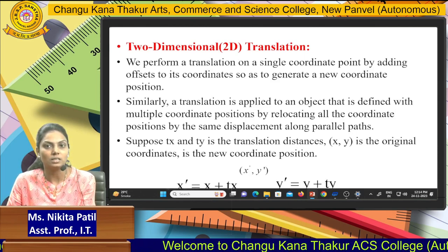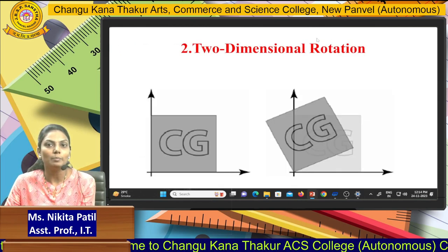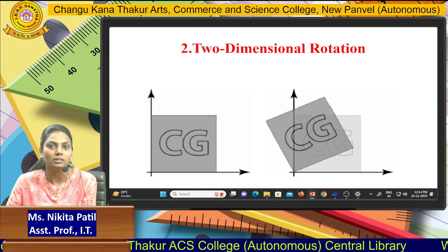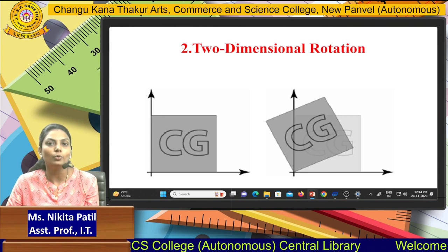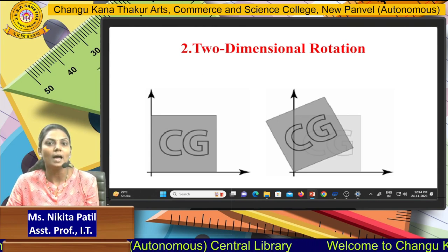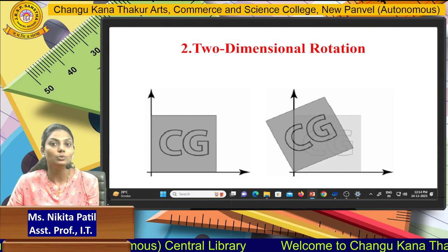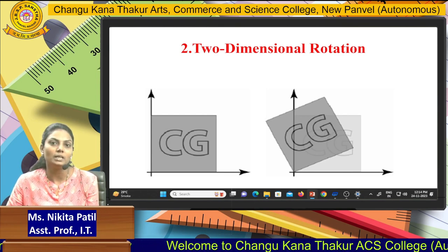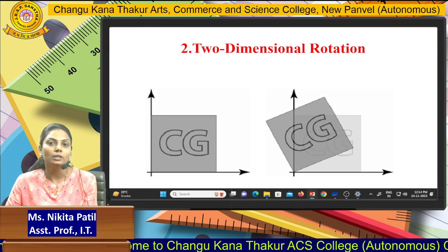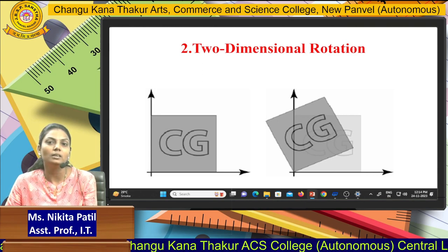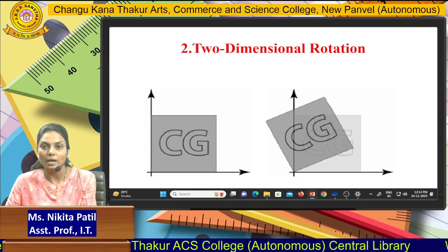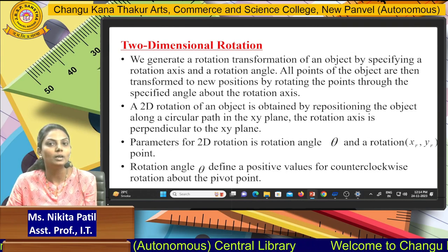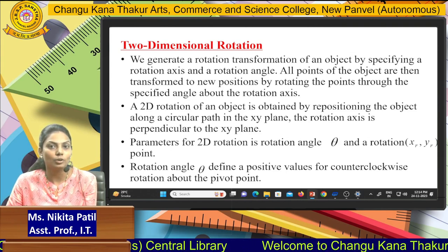The second thing is two-dimensional rotation. Your image can be rotated with the help of angles. In translation you only translate the axis point, but in rotation you rotate the angle position. In the diagram, the first diagram is at 90 degrees; after that you create the theta angle, then the rotation will be about that axis. A 2D rotation of an object is obtained by repositioning the object along a circular path in the x-y plane, where the coordinate axis is perpendicular to the x-y plane.